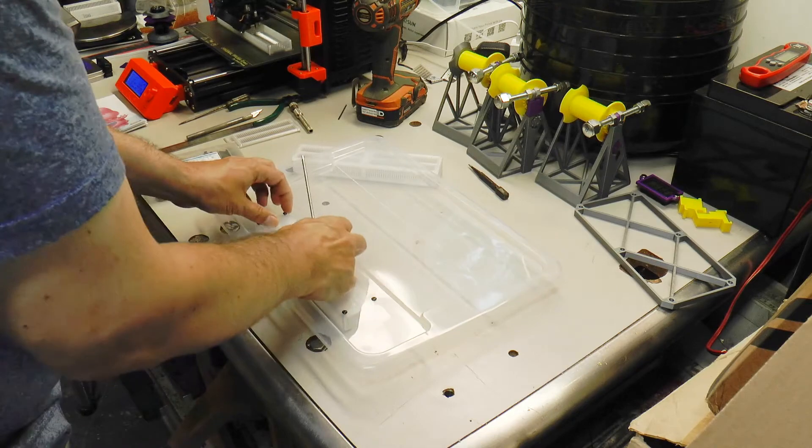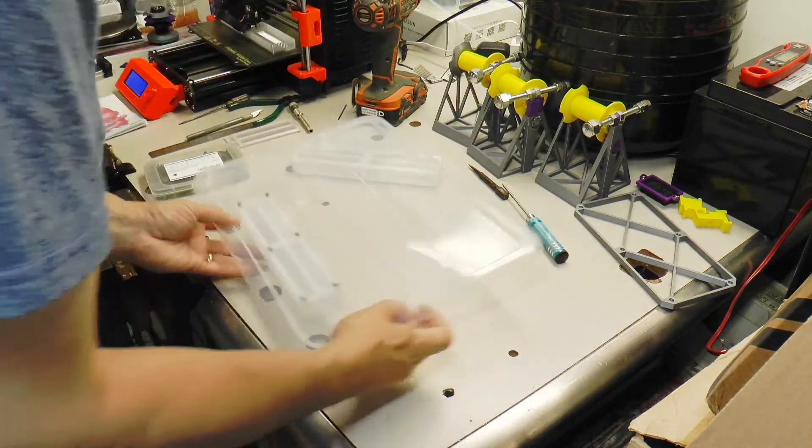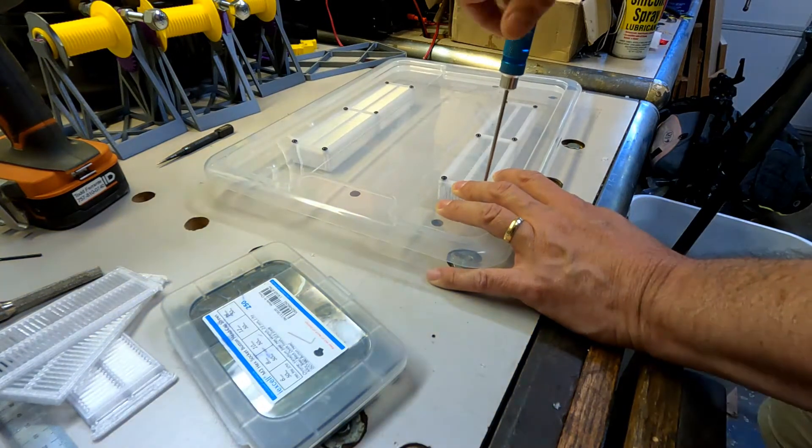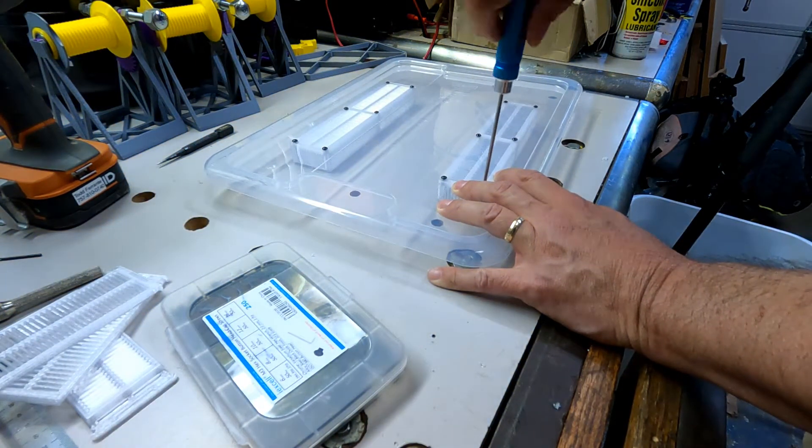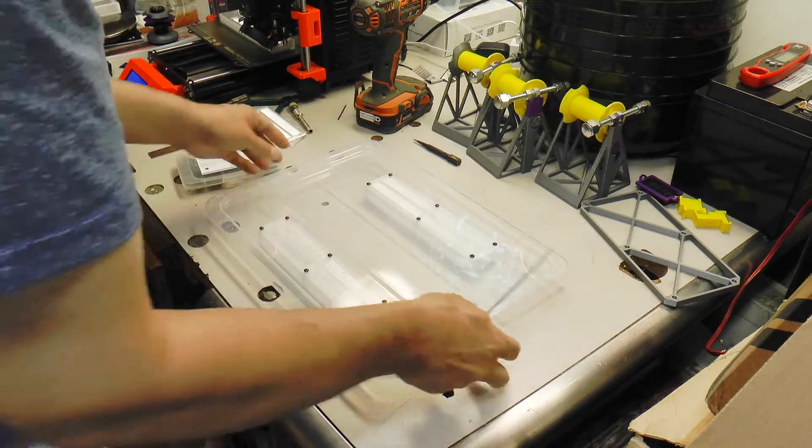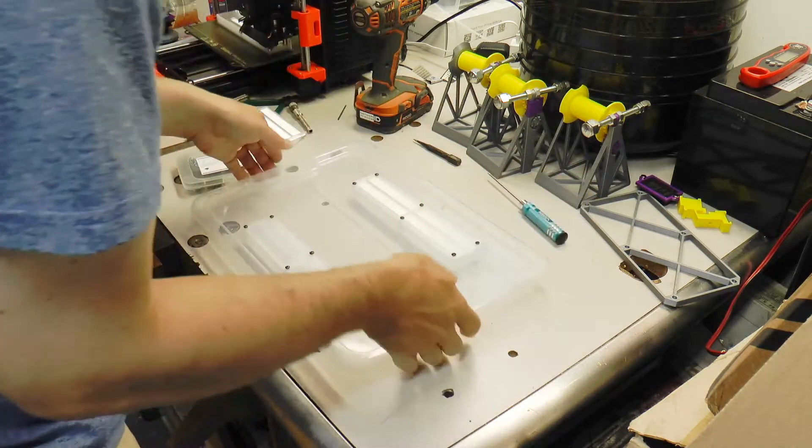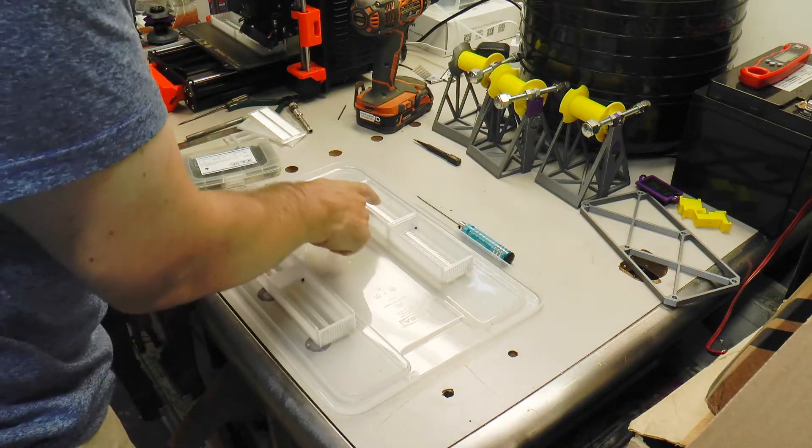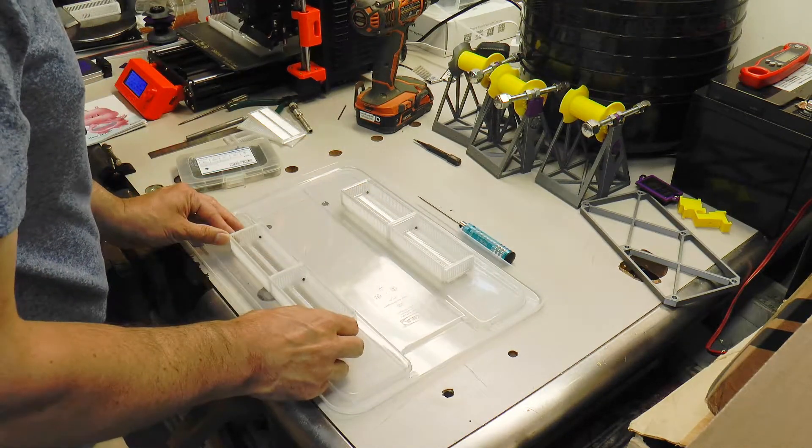The first box is mounted and now we can do the second box. Now both boxes are mounted on the top of the lid and they're ready to be filled with silica gel.